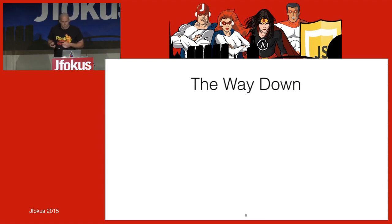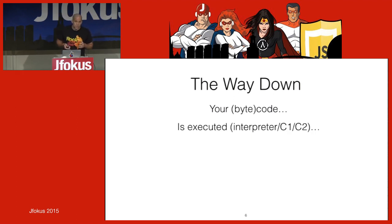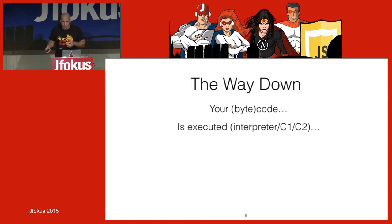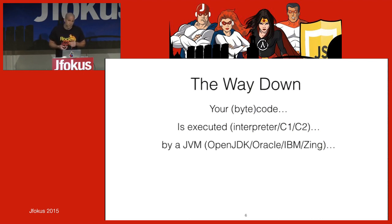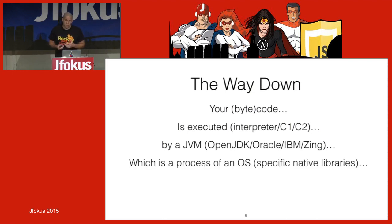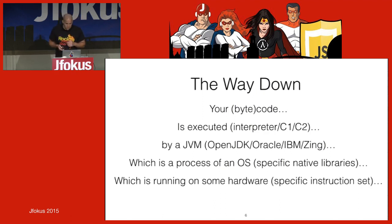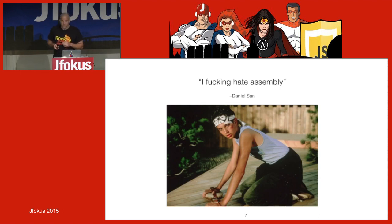Let's have a closer look at the way down. You write your bytecode, it's packed and deployed. Execution is a complicated word — there are different modes: the interpreter, C1 code, and C2 code. The JVM has to put that code somewhere, make sure the OS picks it up, because the JVM is a process inside the OS. Then the OS speaks to hardware — that's where the rubber meets the road.